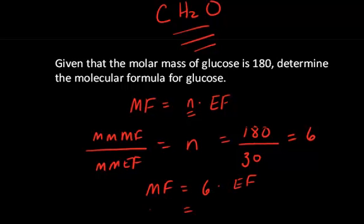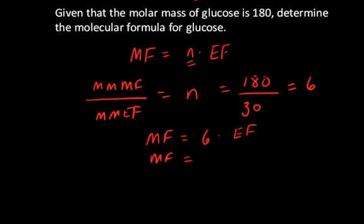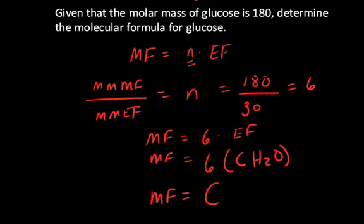The molecular formula equals 6 times the empirical formula, which was CH2O. I multiply distributively 6 by each of those elements, and so the molecular formula is C6H12O6. And that, indeed, is the molecular formula of glucose.